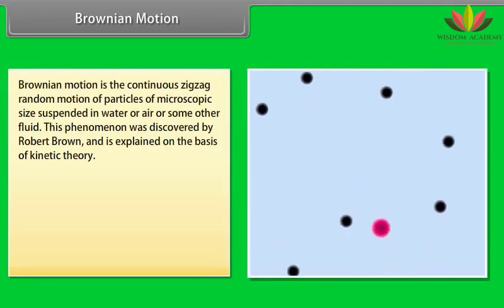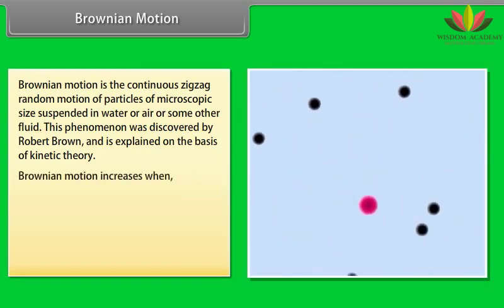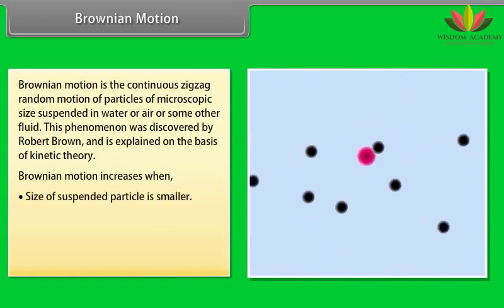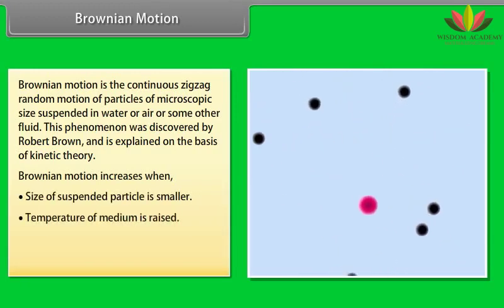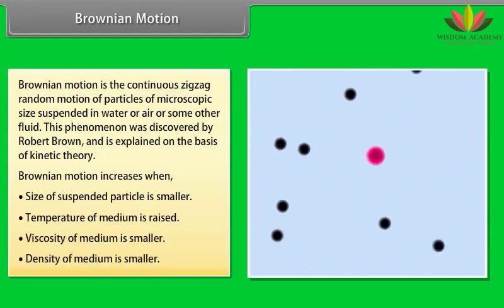Brownian motion. Brownian motion is the continuous zigzag random motion of particles of microscopic size suspended in water or air or some other fluid. This phenomenon was discovered by Robert Brown and is explained on the basis of kinetic theory. Brownian motion increases when size of suspended particle is smaller, temperature of medium is raised, viscosity of medium is smaller, density of medium is smaller.